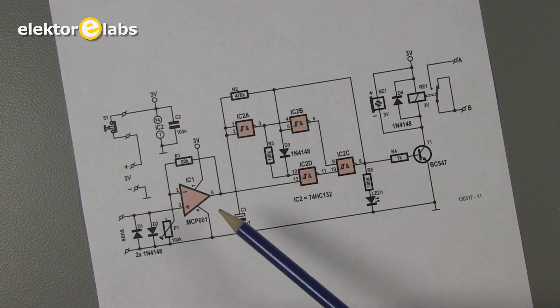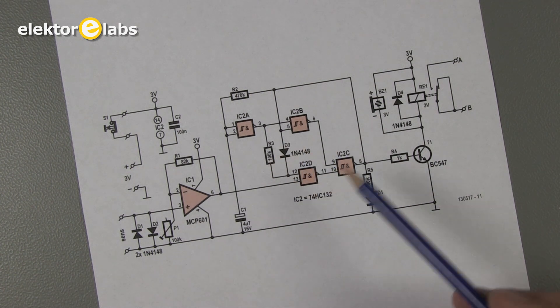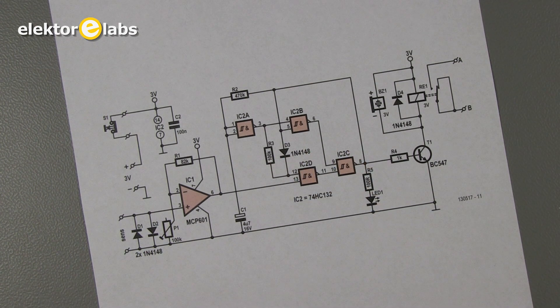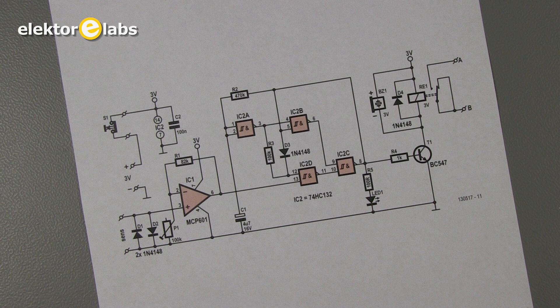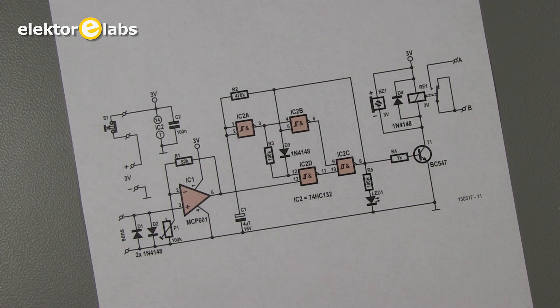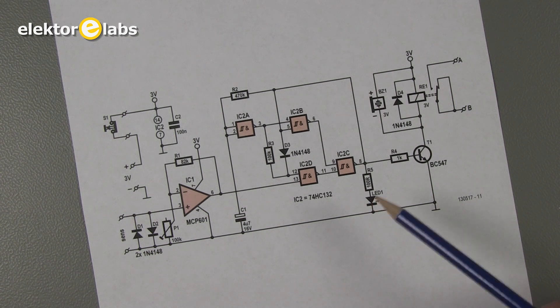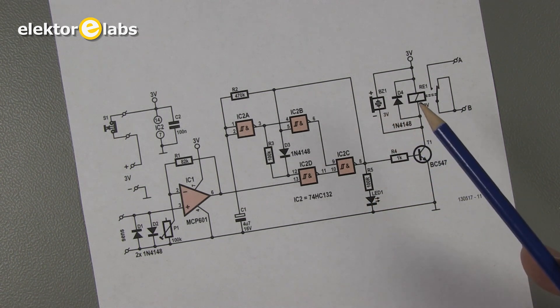The output is connected to a pulse stretcher built around a 74HC132 quad gate with Schmidt trigger inputs. The pulse stretcher output drives an LED, a mini buzzer and a relay.